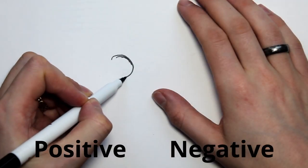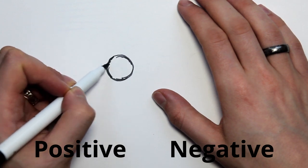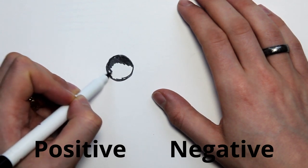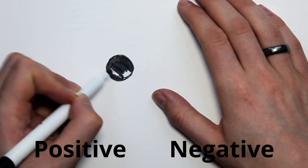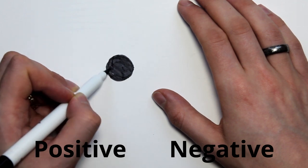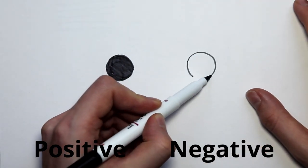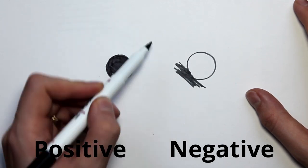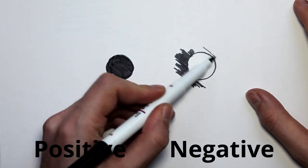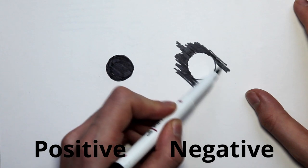Positive shapes are the shapes of actual objects. They're solid shapes. Negative shapes, on the other hand, are the space around or between objects. So negative shapes can often appear almost like a hole or a gap between something.